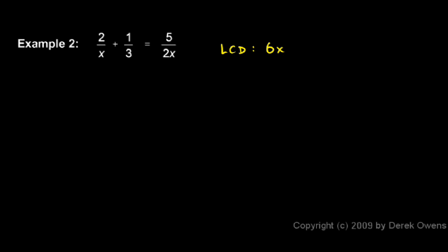So we can multiply both sides of the equation by 6x. So this is what we get. We have 2 over x plus 1 third equals 5 over 2x. I'm just going to rewrite it so that I have room to write in the multiplication times 6x on the left and times 6x on the right.